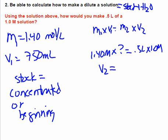My volume I should use should be 0.5 times 1 over 1.4. So 0.5 divided by 1.4.